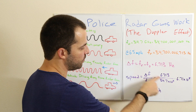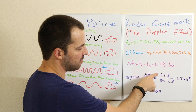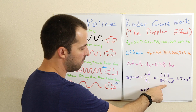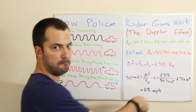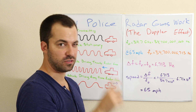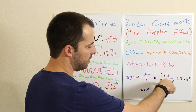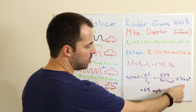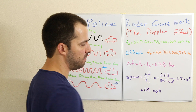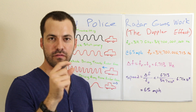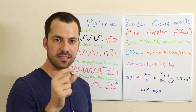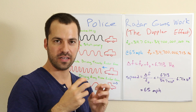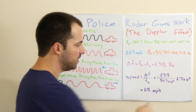We plug in all the numbers and we see we have a pretty small number here — 6,713 divided by 34 billion — so it's a very, very tiny number, times the speed of light. So what we're looking at is basically a very small fraction of the speed of light that's due to the difference caused by the moving vehicle.